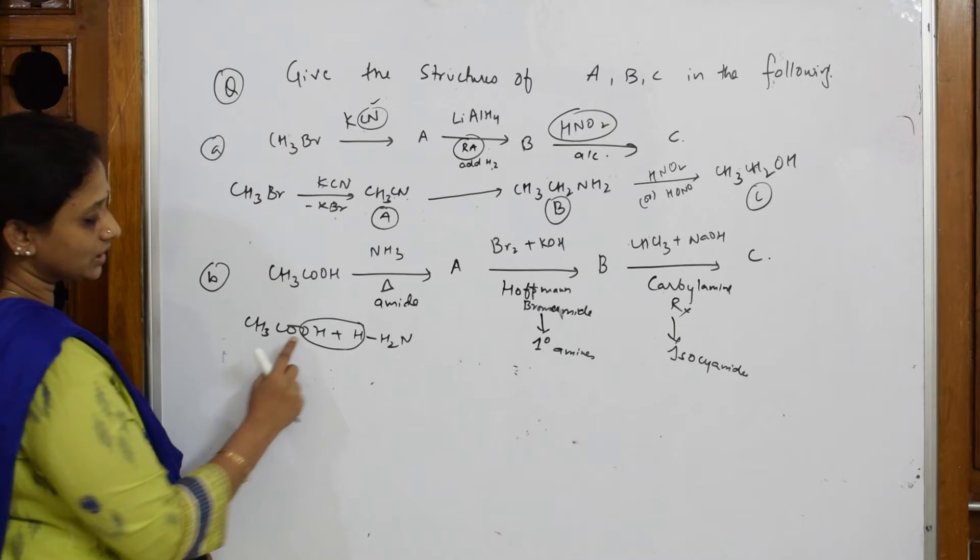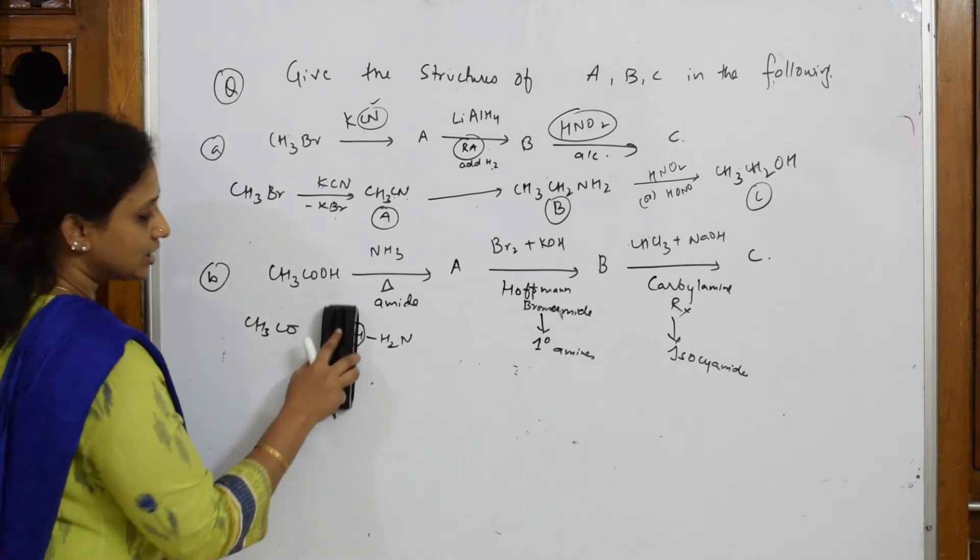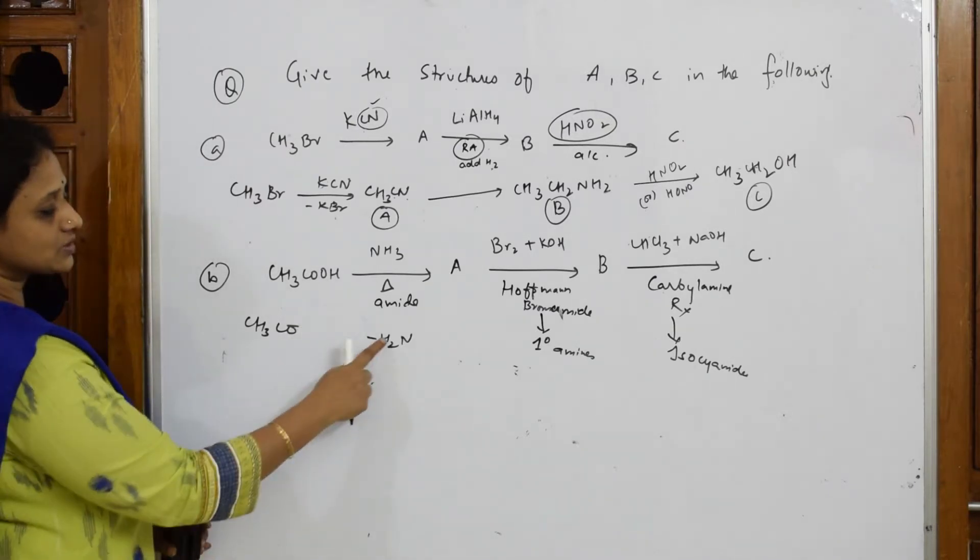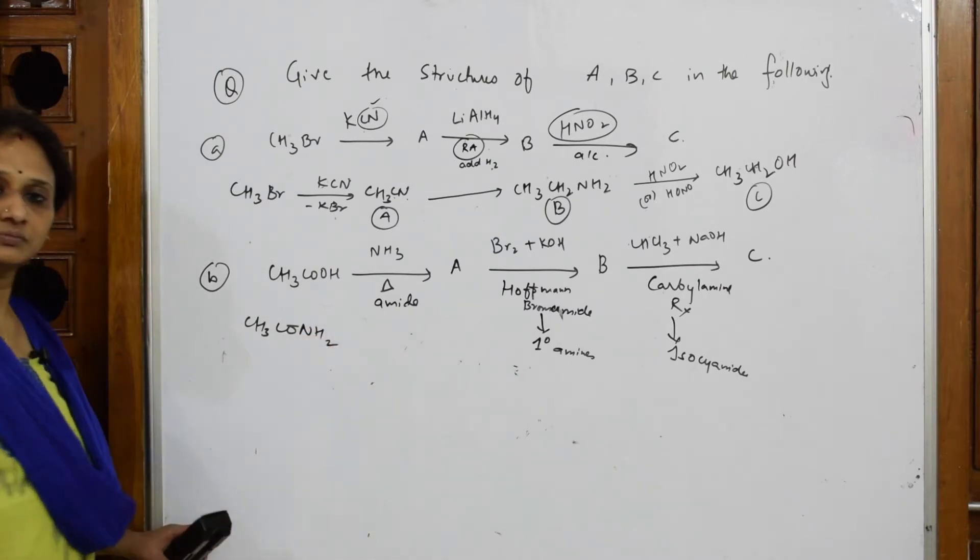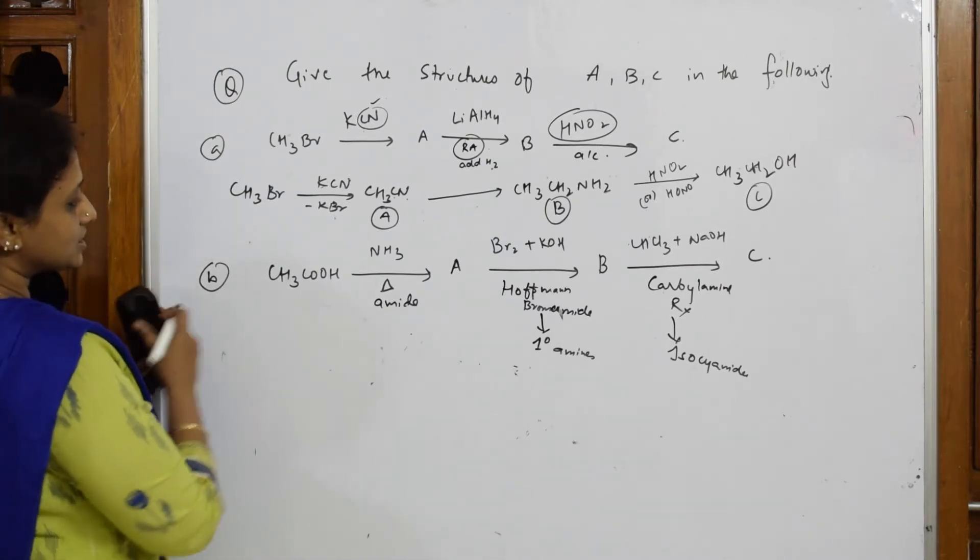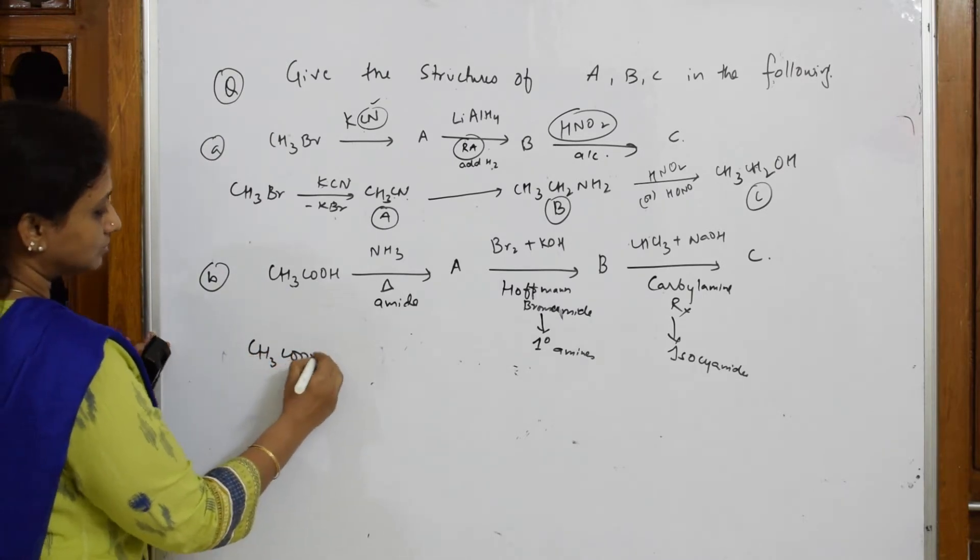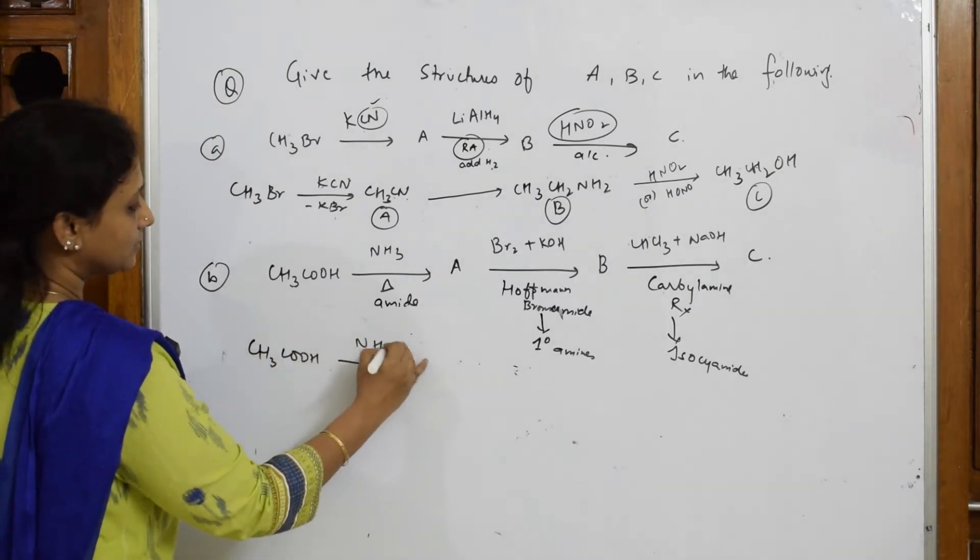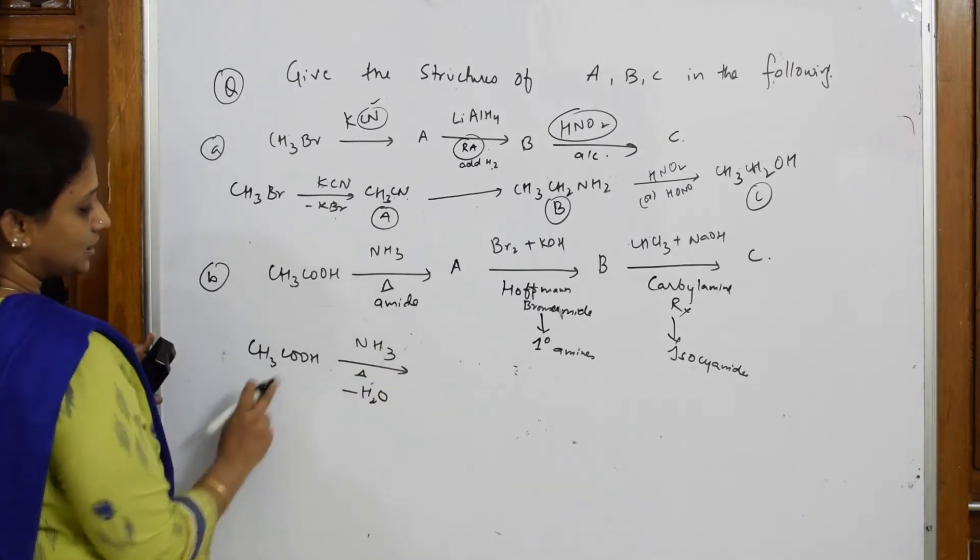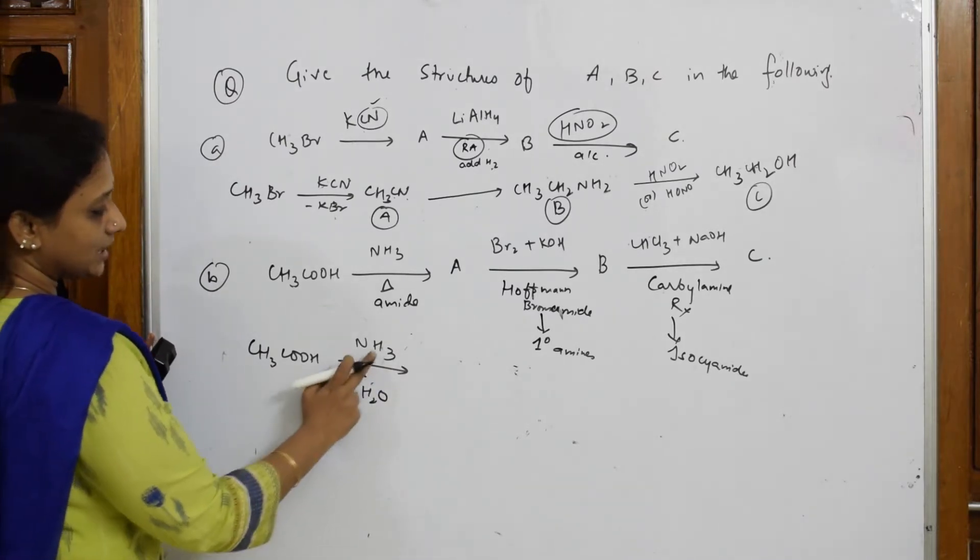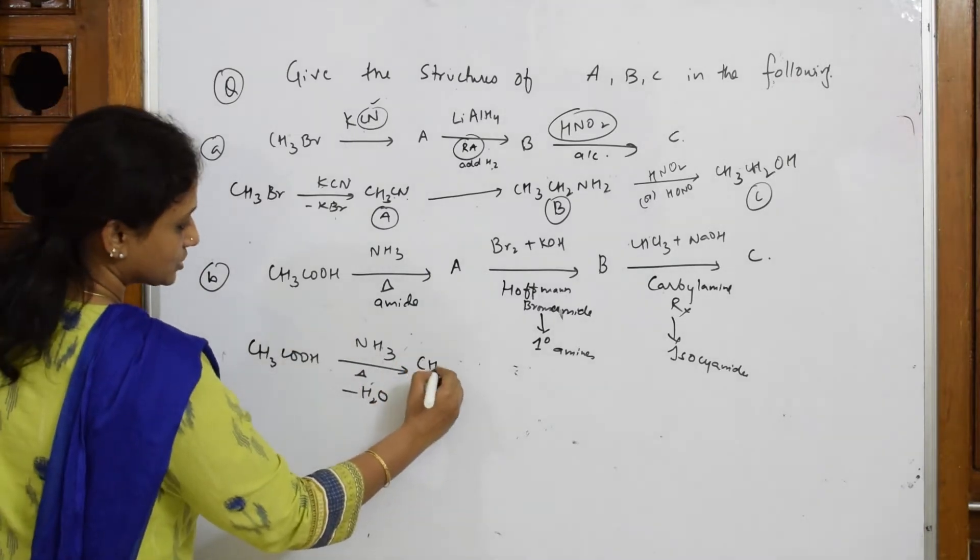When you take out water molecule, what are you left with? This NH2 will come and add here. Let us remove this water. When this goes and adds here, what compound do I get? NH2. So write that compound first. Acetic acid in the presence of ammonia and heated, what is released out? Water. OH is replaced by NH2. So CONH2 - acetamide. I got amide.